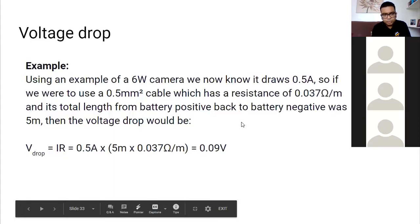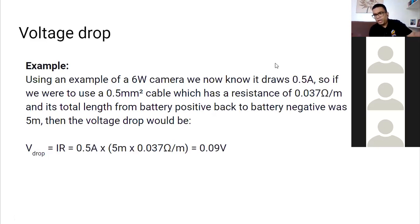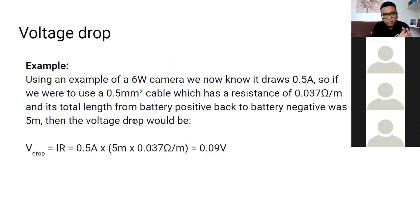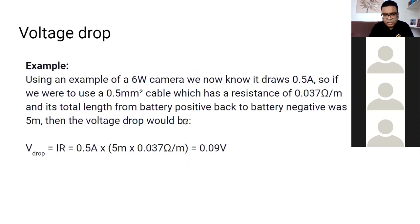Here's a worked example: a 6W camera draws 0.5A. Using a 0.5mm cable with a resistance of 0.037 ohms per metre over a total cable run of 5 metres. To find total resistance: 5 × 0.037 = 0.185 ohms. The camera requires 0.5A. Using V = IR: voltage drop = 0.5 × 0.185 = 0.0925V — well within the ±10% tolerance of 1.2V.